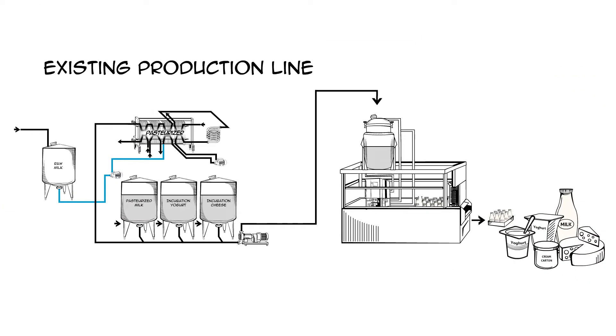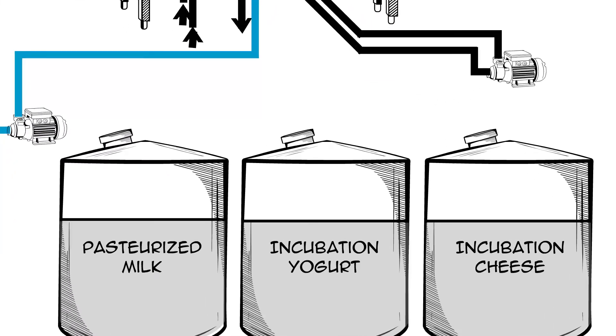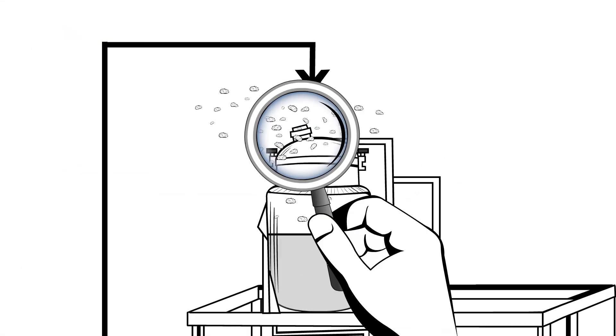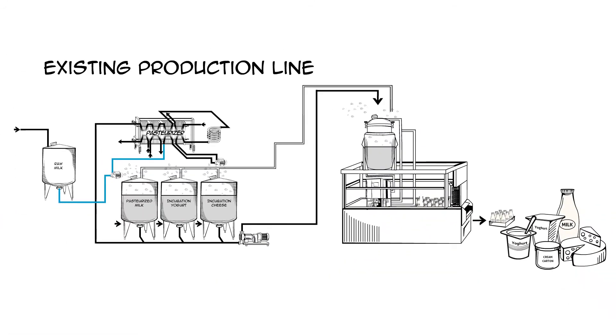First, they'll review your existing production lines and identify points where contaminants are a risk. The problem with traditional non-pressurized tanks is that when the product is pumped out, air that contains contaminants can enter the tank.